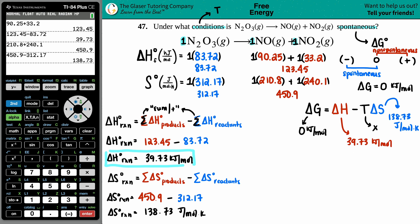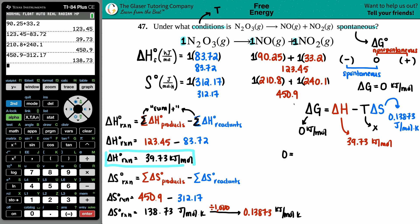Now check your units: delta G is in kilojoules per mole, delta H is in kilojoules per mole, but delta S is in joules. The units of energy have to match, so we convert delta S from joules to kilojoules by dividing by 1,000, giving 0.13873 kilojoules per mole Kelvin. Now we set up: 0 equals 39.73 minus T times 0.13873.